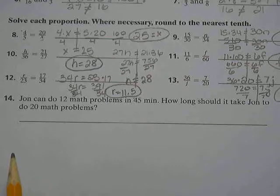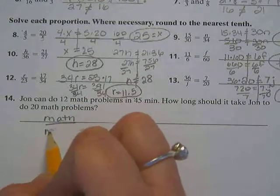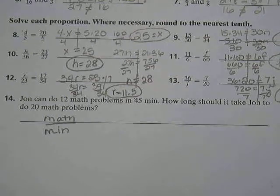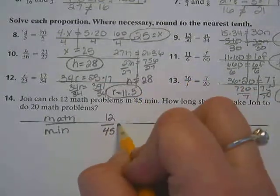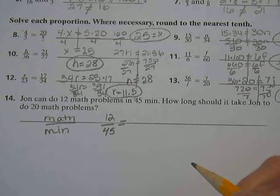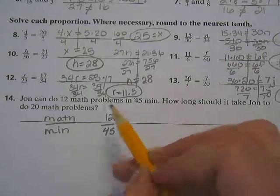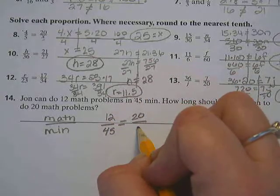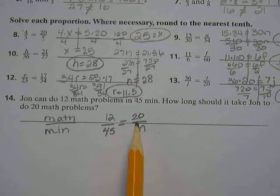Okay, last one together. What two things are we comparing here? Math problems and minutes. Does it matter whether we put math problems or minutes on top and bottom? As long as you know which one is which. So which one shall we do? Math problems on top, minutes on the bottom. Okay. So he can do 12 math problems in 45 minutes. He wants to know if they're all the same problem type. If he did 12 in 45 minutes, he has to do 20. How long is it going to take him?